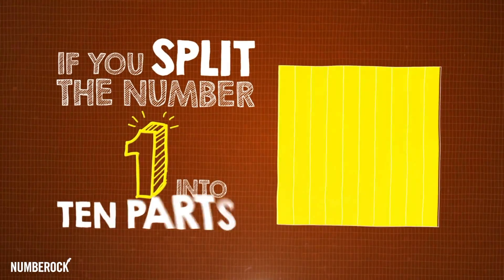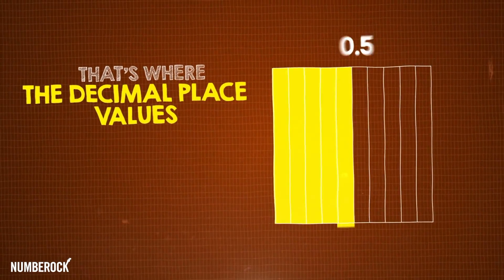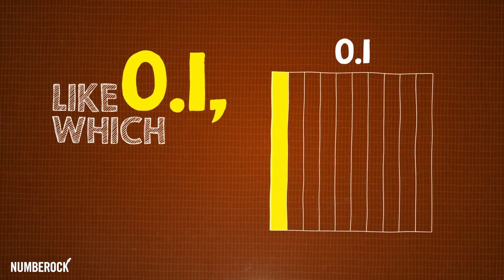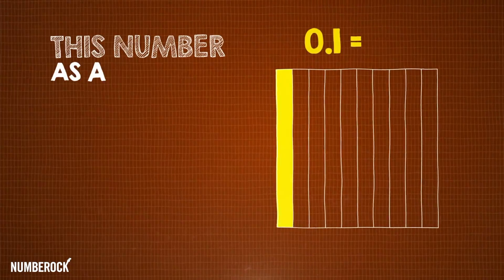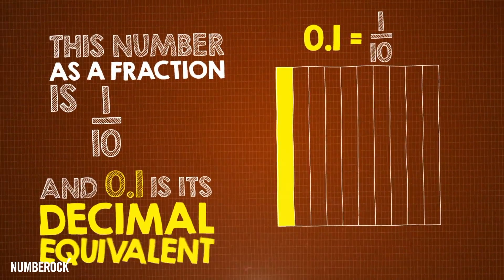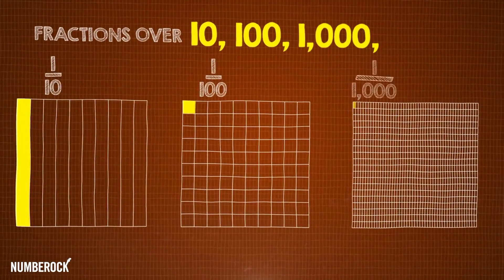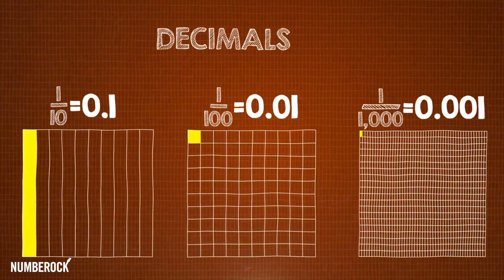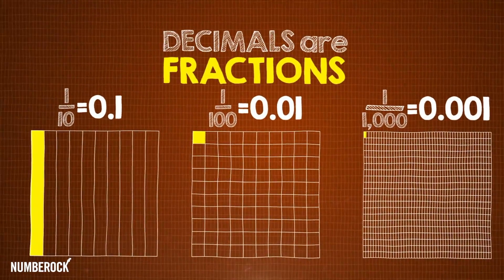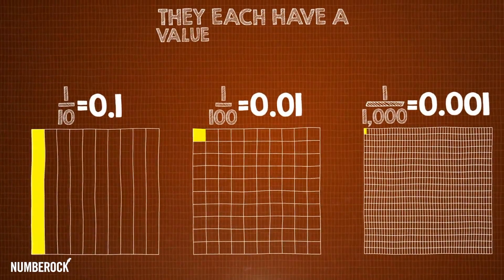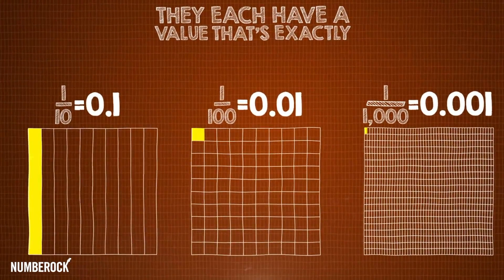If you split the number 1 into 10 parts, that's where the decimal place values start. The values are still 1; they're quite small, like 0.1, which is a decimal, y'all. This number as a fraction is 1 over 10, and 0.1 is its decimal equivalent. Fractions over 10, 100, 1,000 and more are our decimal numbers — it's a phenomenon!